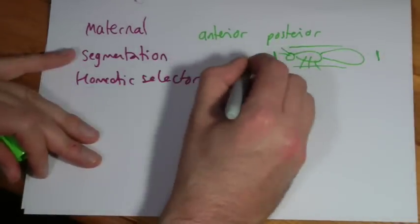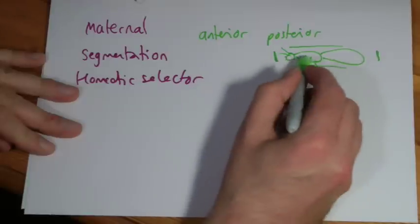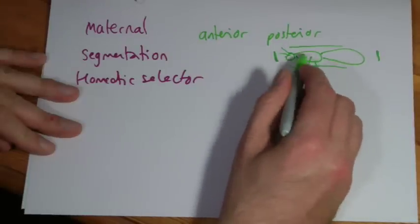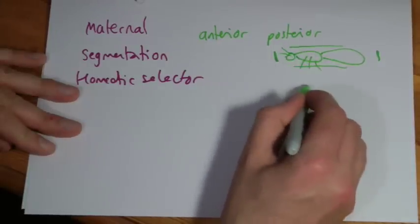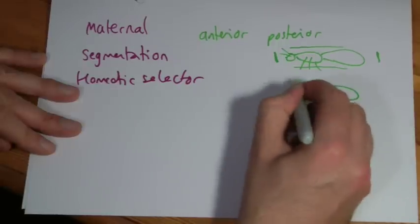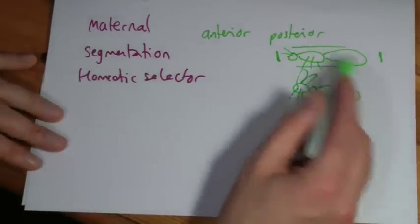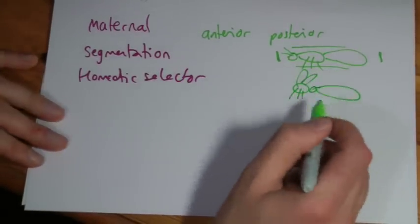The segmentation genes determine the position of each segment. Why is the body, the thorax there? Why not have your thorax at the front, then your head, and then - well, it wouldn't work. The embryo would never develop, and of course you can make these mutations happen, but it's never going to develop.